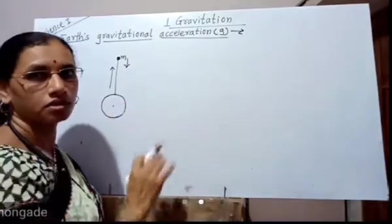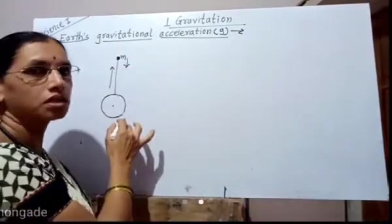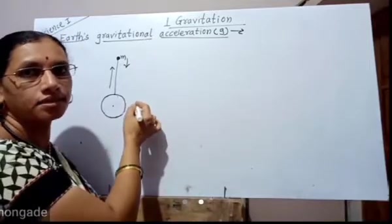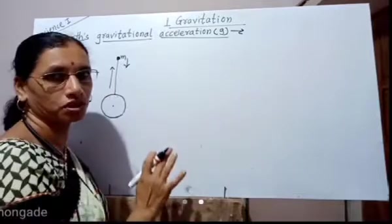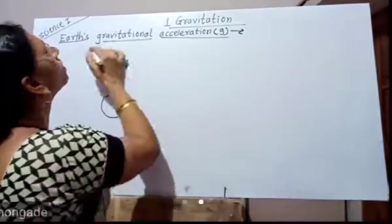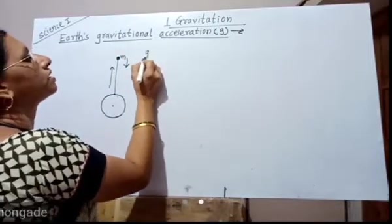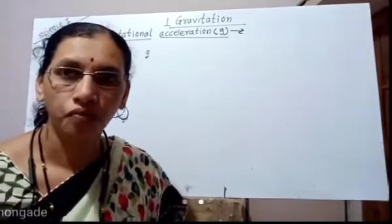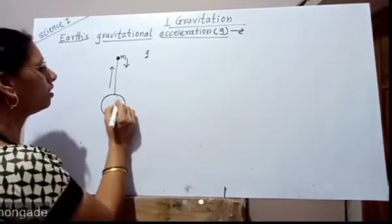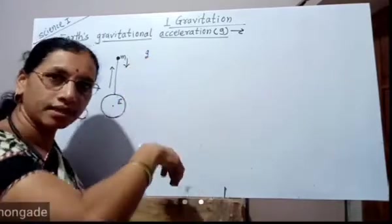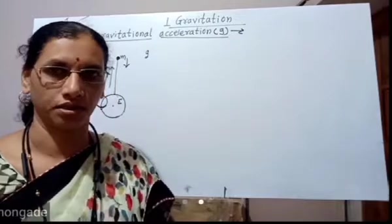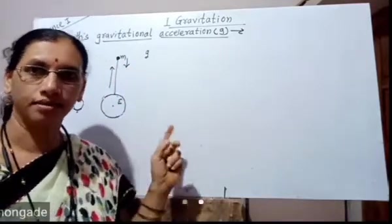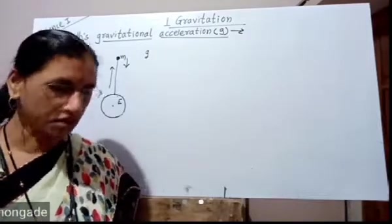Rate of change of velocity is known as acceleration. When an object is thrown upward and comes back towards the earth, its velocity changes, and this change in velocity per unit time is known as acceleration. This change in velocity is due to earth's gravitational force, and therefore it is known as gravitational acceleration or earth's gravitational acceleration, denoted by small g. The gravitational force due to the earth on a body results in its acceleration — this is known as earth's gravitational acceleration.